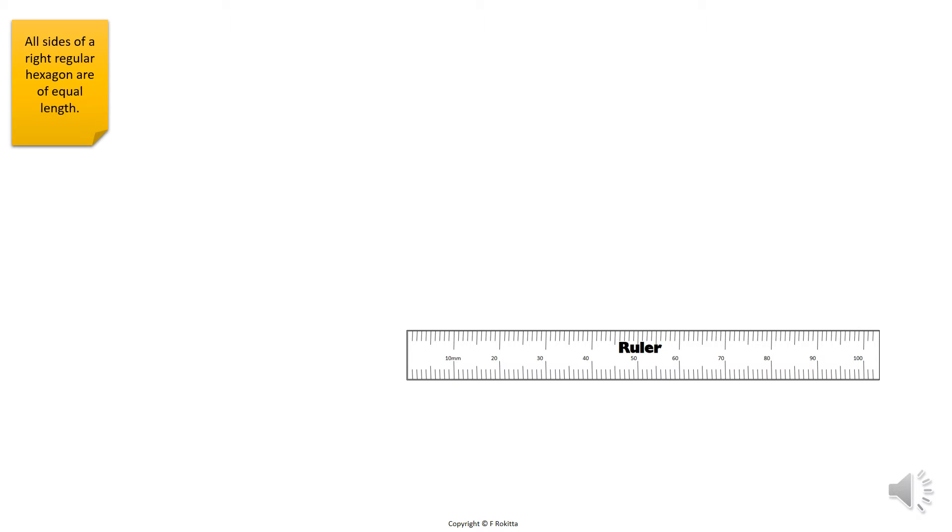We start this drawing by drawing the base line according to the base distance as required. This is called the base length. We label the base length as AB.